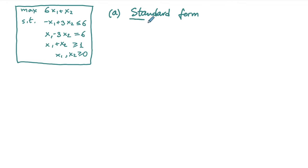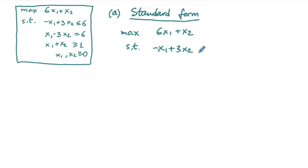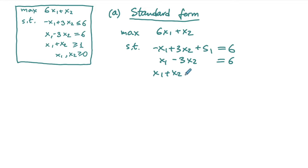To convert to standard form, we convert all inequality constraints into equality constraints. So we have maximize 6x1 plus x2 subject to: negative x1 plus 3x2 plus s1 equals 6 (adding a slack variable for the ≤ constraint). The second constraint is already equality: x1 minus 3x2 equals 6. The last constraint is ≥ type, so we subtract an excess variable: x1 plus x2 minus e3 equals 1.